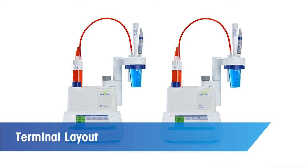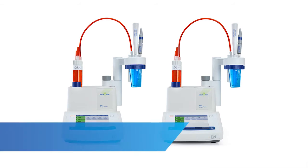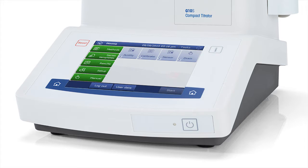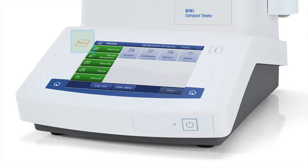The first thing we'll do is get to know the layout of the titrator's terminal. The Power button is located here on the front of the instrument. Pressing the Info button accesses interactive online help for the content of the dialog currently on screen. The Home button returns the user to the Home screen from any menu position, even while tasks are running. And the Reset button ends any current tasks.